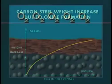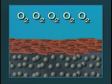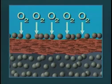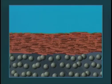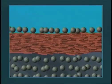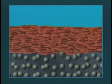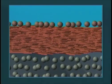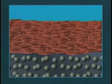Then it slows down. This is because at first it's easy for the iron and oxygen atoms to join up. But as the iron oxide gets thicker, it becomes more difficult for iron atoms to reach the oxygen. However, it never stops forming, and eventually the carbon steel would be completely destroyed.